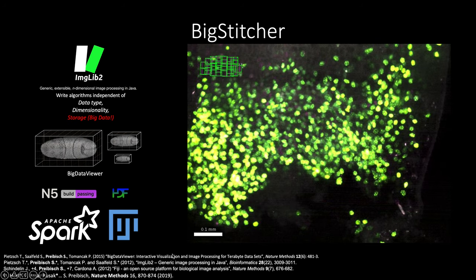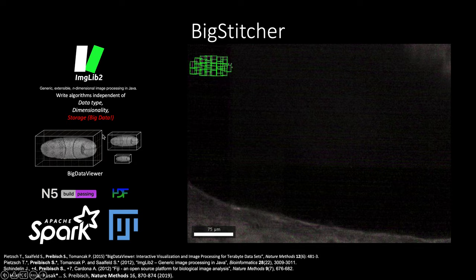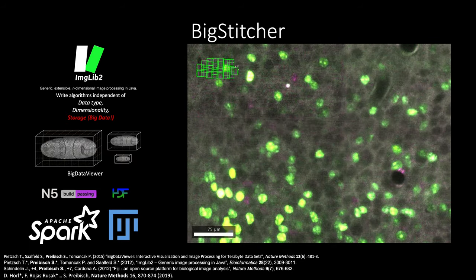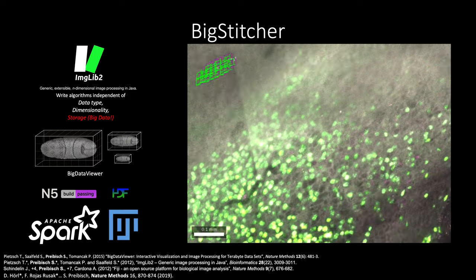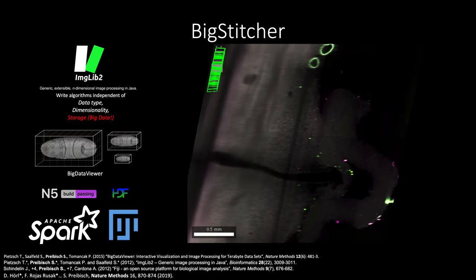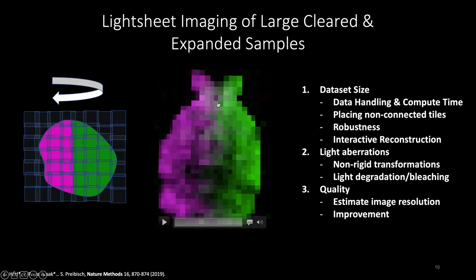Back in the days, this paper is from 2019, we developed BigStitcher. This is a user-friendly tool that brings ImageLib2, BigDataViewer, N5, HDF5 for storage to the experimentalist. It's a Fiji plugin that easily enables you to manage up to one to two terabyte size data, and you get this Google Maps-like access in terms of visualizing but also processing. It can deal with relatively large data sizes, we manage things like data handling and compute time in reasonable effort on your workstation. You can handle non-connected tiles, it's quite robust, and it allows you to interact with reconstruction, which is very important because things always go wrong.